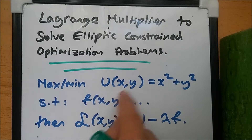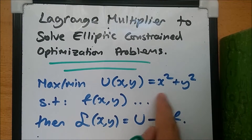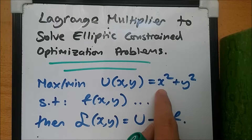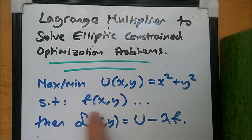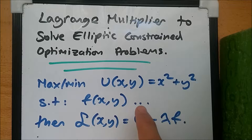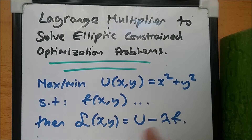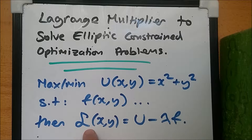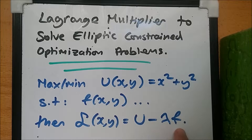The aim is to maximize or minimize the unit circle equation in 2D space, where we have x squared plus y squared, subject to a given constraint function — typically in the form of an ellipse such as x squared plus b times xy plus c times y squared equals some constant. We then use the Lagrangian, denoted with a curly L. The Lagrangian for x, y equals the unit circle minus lambda times the elliptic function.